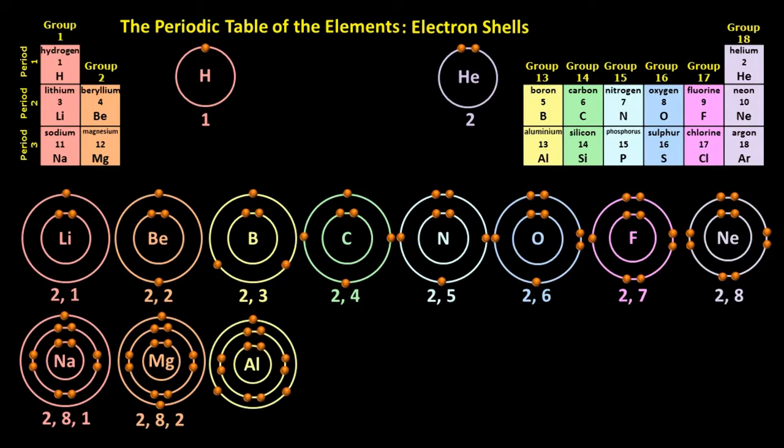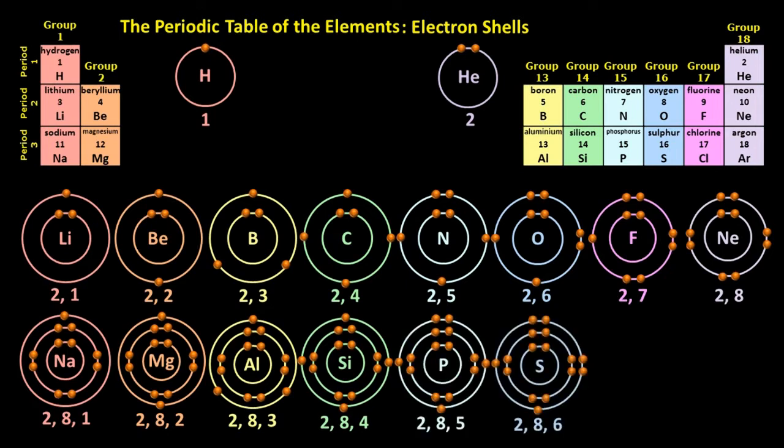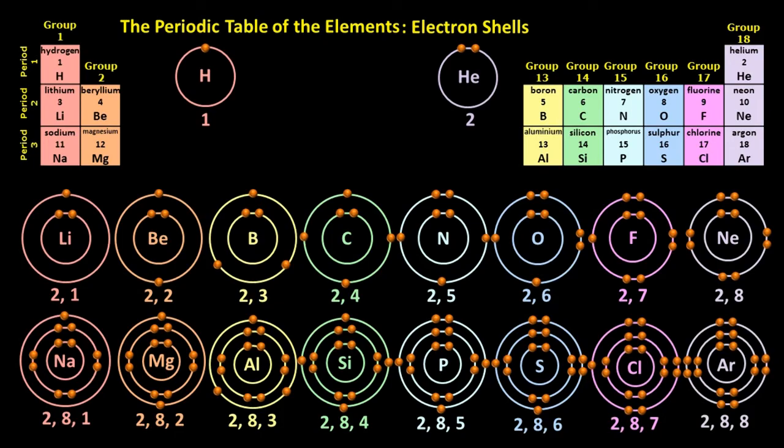We then have aluminium, or aluminum if you prefer, with two, eight, three. Silicon with two, eight, four. Phosphorus with two, eight, five. Sulfur with two, eight, six. Chlorine with two, eight, seven. And finally, argon with two, eight, eight.